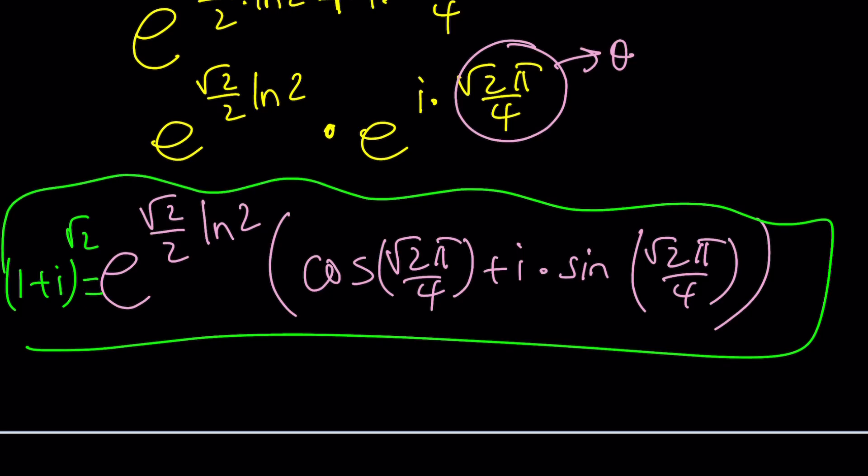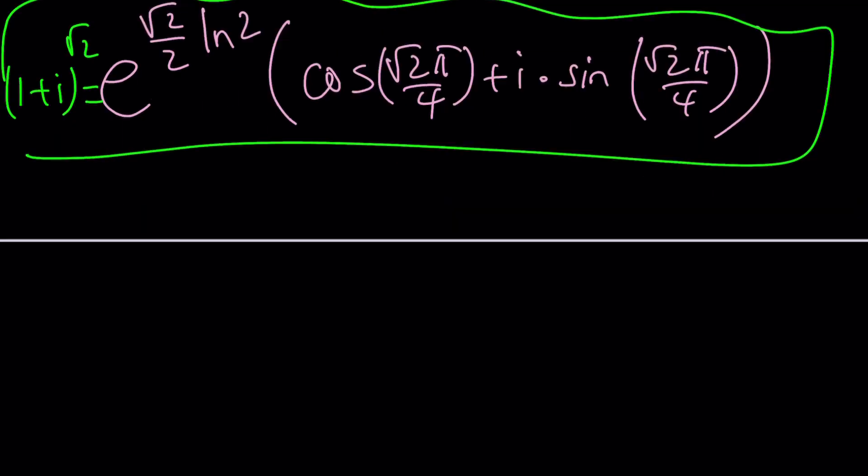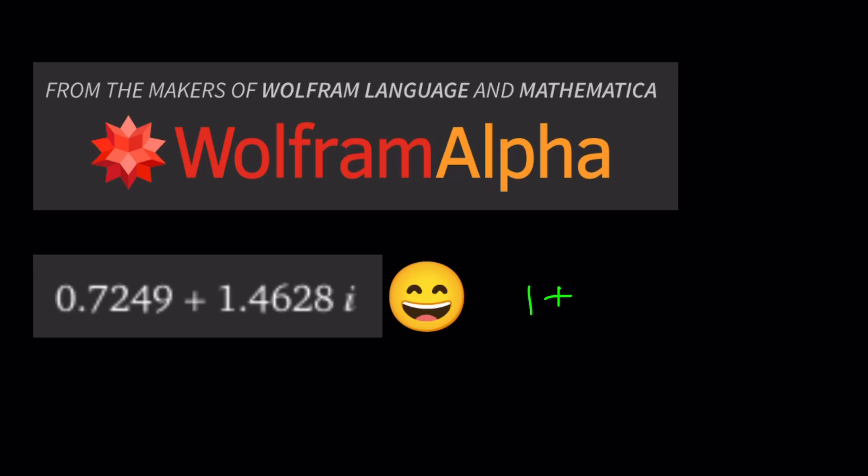Now let's go ahead and check our results with Wolfram Alpha where you will see the numerical answer. Okay? Ta-da! Yes, this is our numerical answer. So in other words, 1 plus i to the power root 2 is just another complex number. And this brings us to the end of this video.